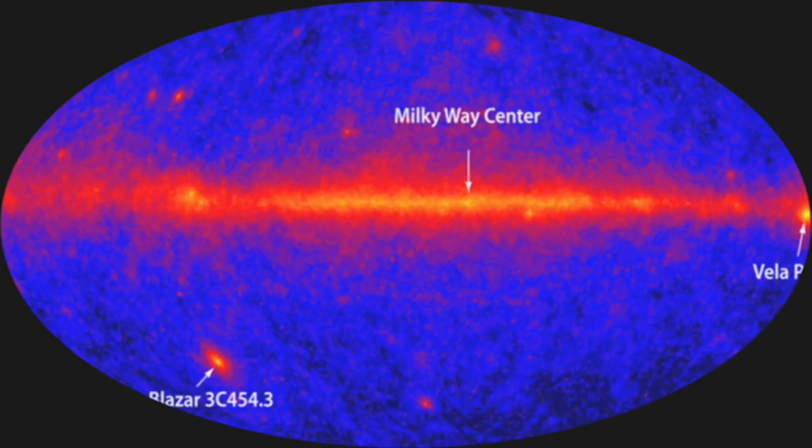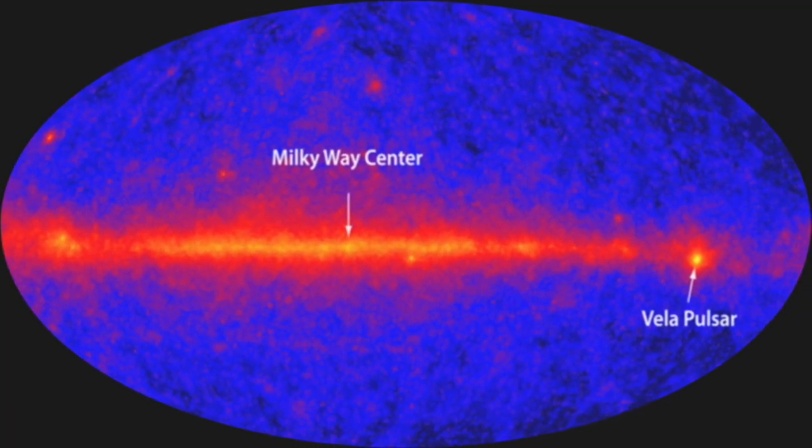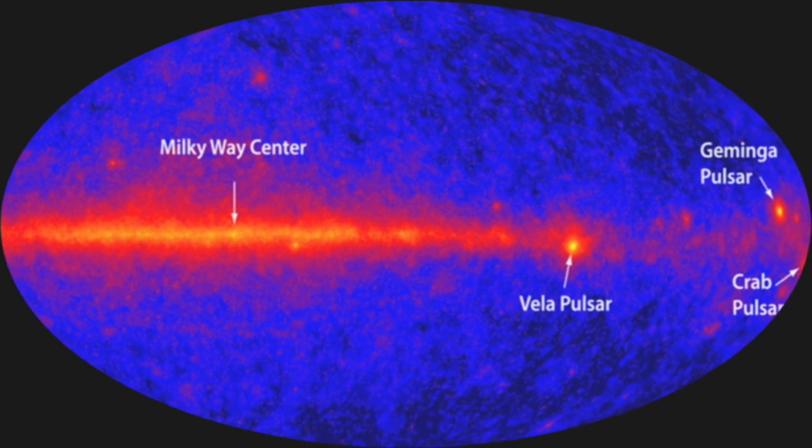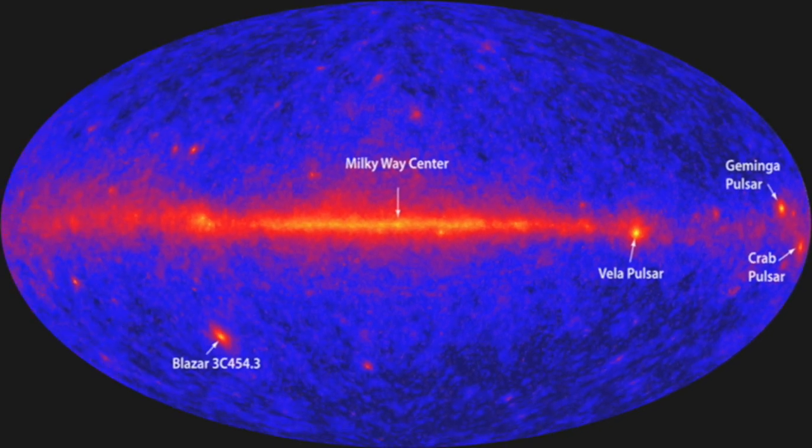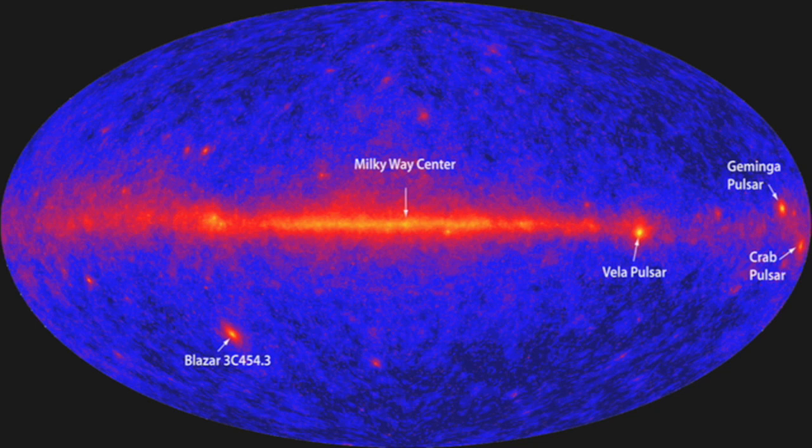Take a look at this. Fermi sent this image back to Earth. It combines 95 hours of images of the sky and gamma rays emitted. If you look close, you'll see that's our own Milky Way galaxy right there in the center. There are immensely powerful gamma rays coming from our own galactic backyard.